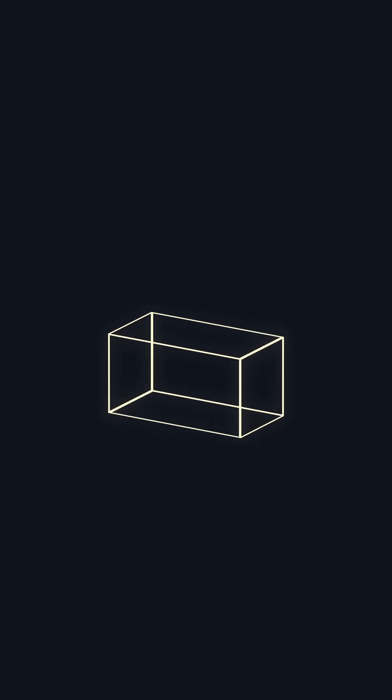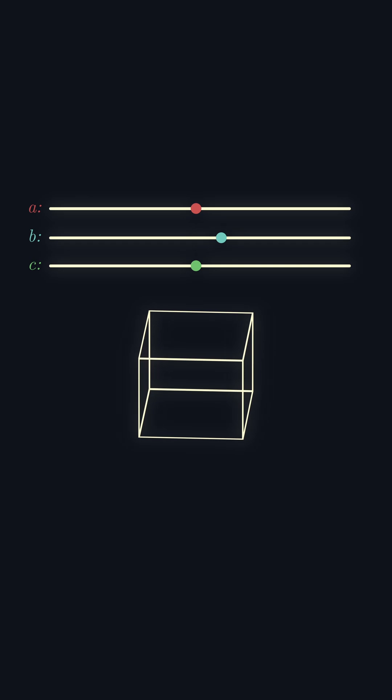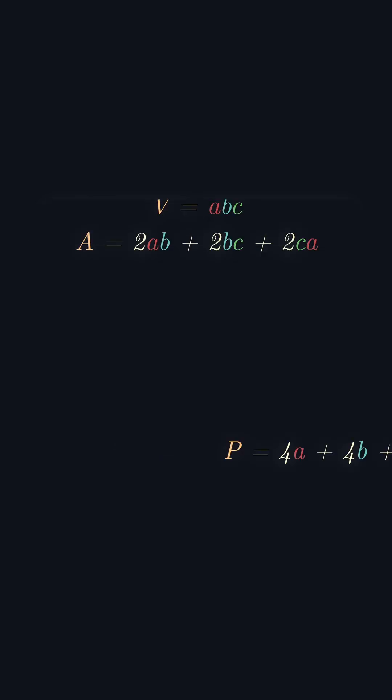Suppose that such a cuboid exists. Let the side lengths of this cuboid be a, b and c. The volume, surface area and perimeter are as follows and they can be set equal to n.